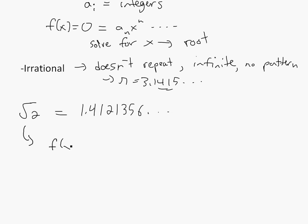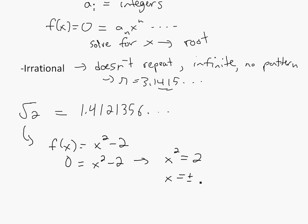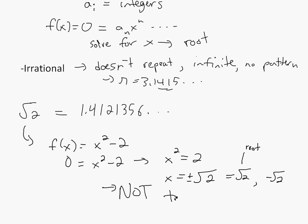For instance, we can have f of x equals x-squared minus 2. If we set this to zero, we have 0 equals x-squared minus 2. Solving for this, we get x-squared equals 2, and then x equals plus or minus square root of 2. So square root of 2 is a root of this polynomial, which means it's not transcendental.